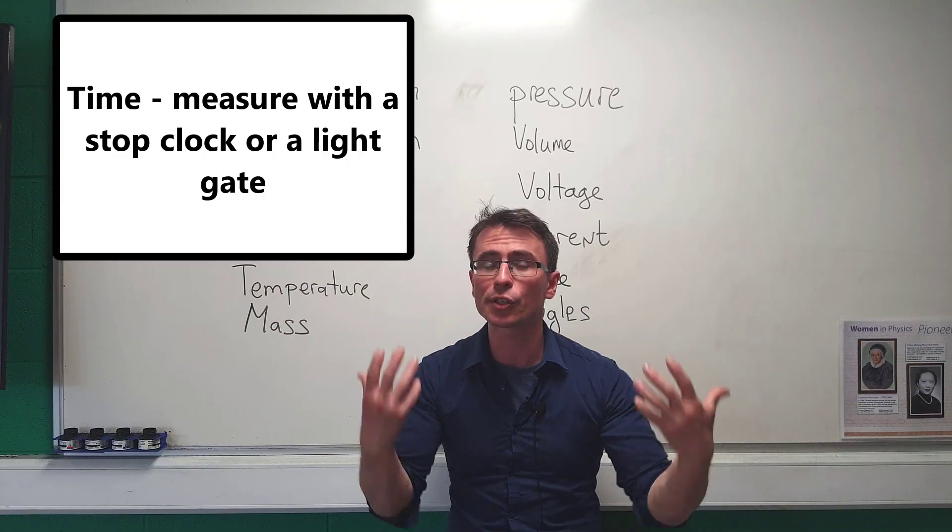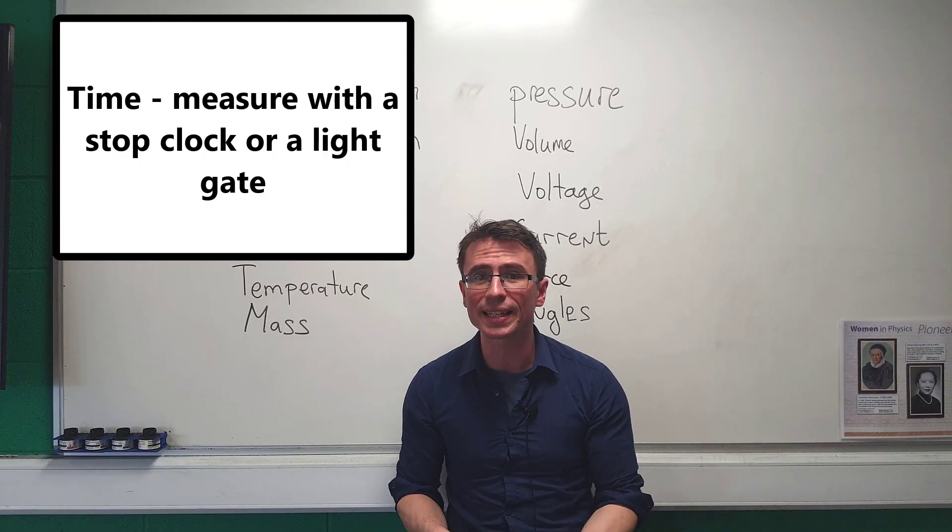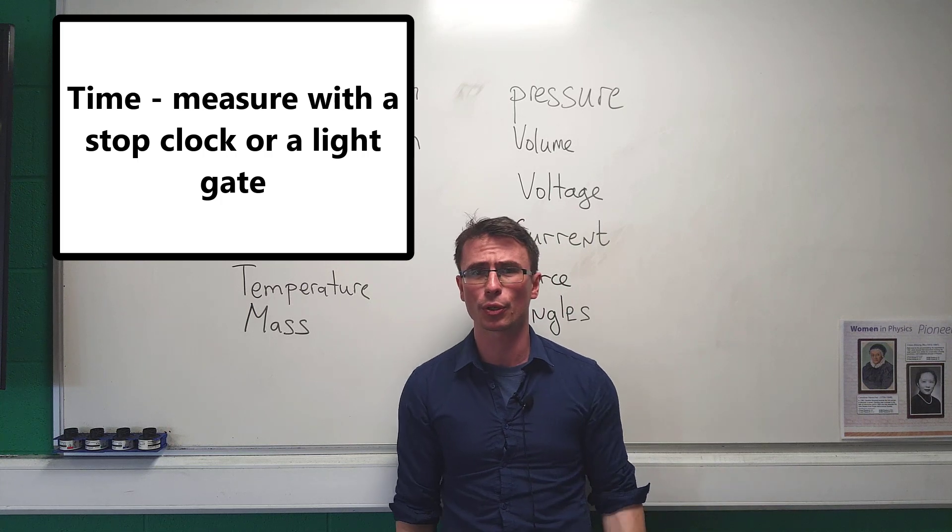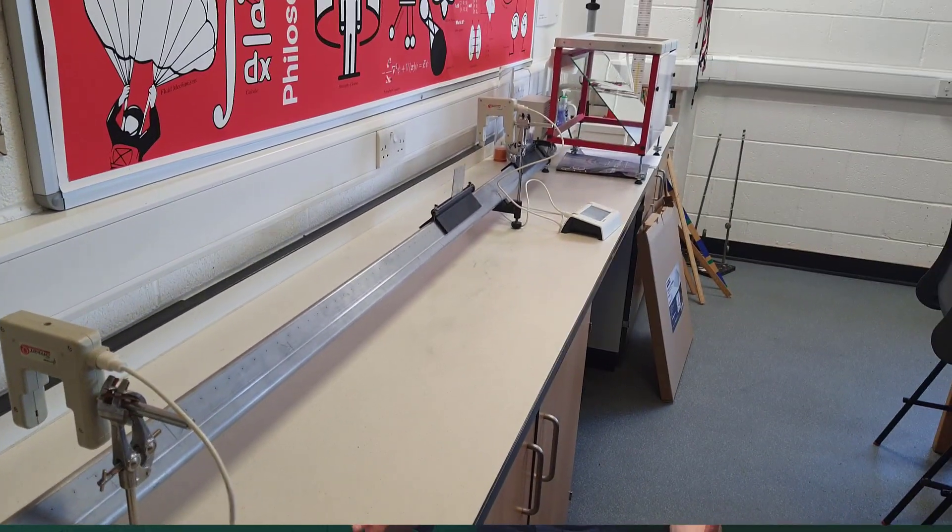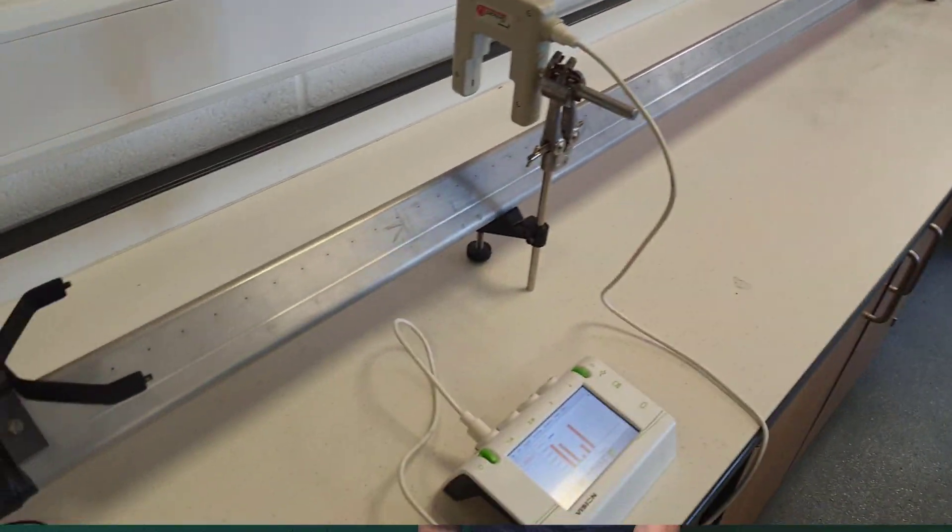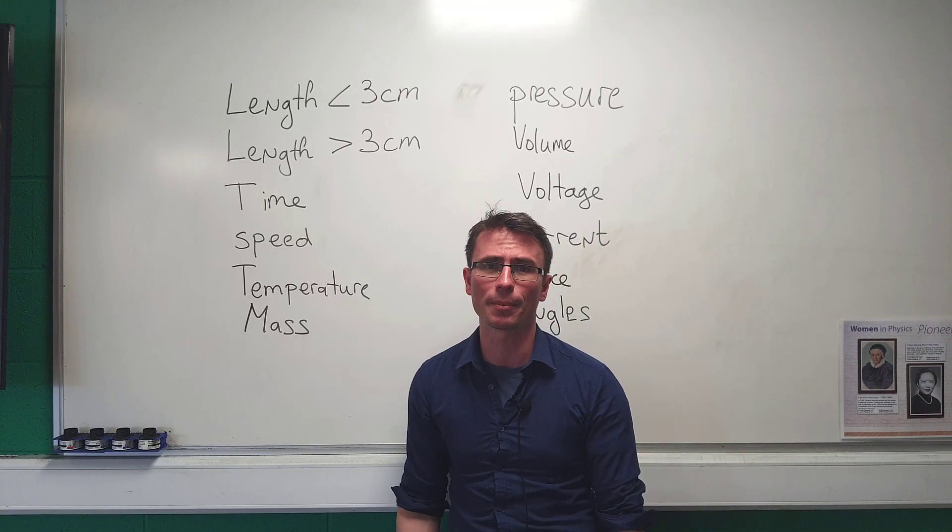Time could be measured with a stop clock, or if we're interested in the amount of time it takes for an object to go from one position to the other, we could position a light gate at those two points. This will help us to improve the accuracy of our experiment.